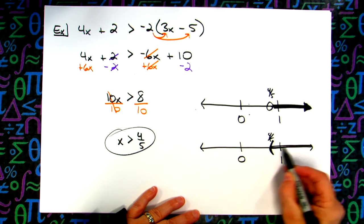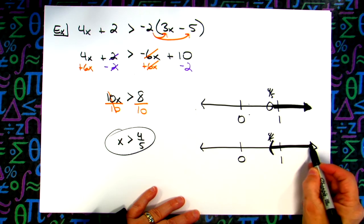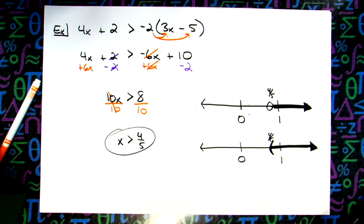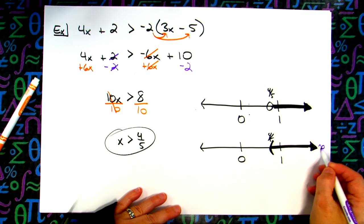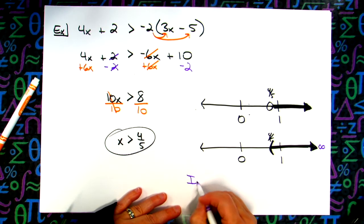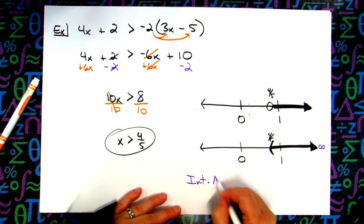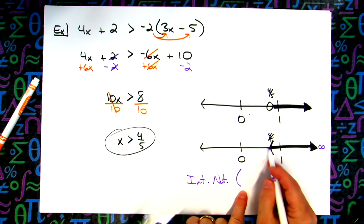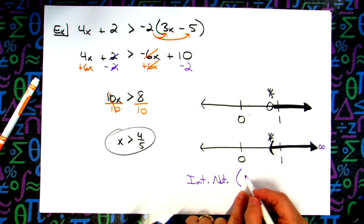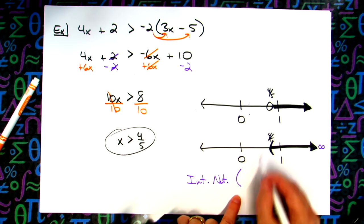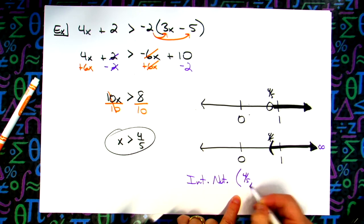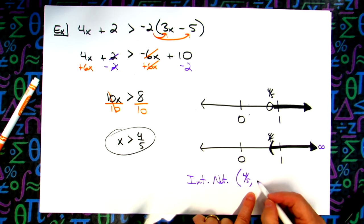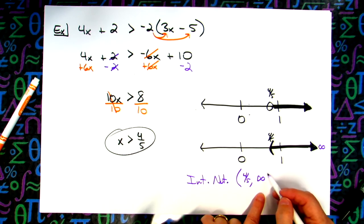I'm still shading to the right. We said that positive infinity is over here. So my interval notation, let's go ahead and write it. I'm going to abbreviate. Curvy bracket on what number? Four fifths. Because that's my answer. Four fifths right there. All the way to my infinity. And then what kind of bracket always goes on infinity? Curvy.